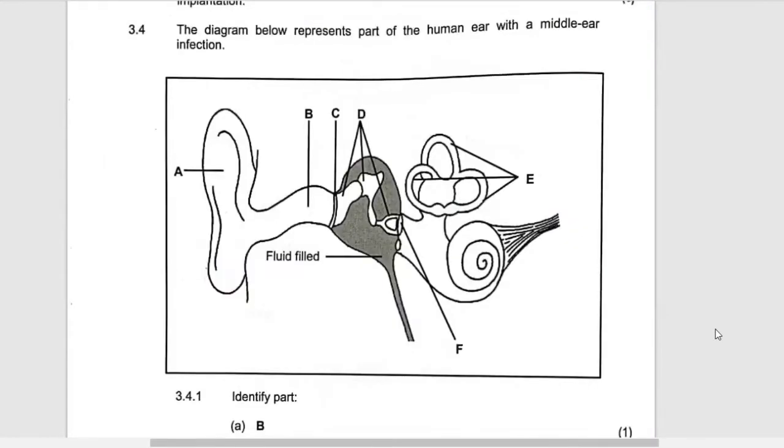Question 3.4. This is the structure of the ear. You need to know exactly what this is. They are saying that the diagram below represents part of the human ear with a middle ear infection.